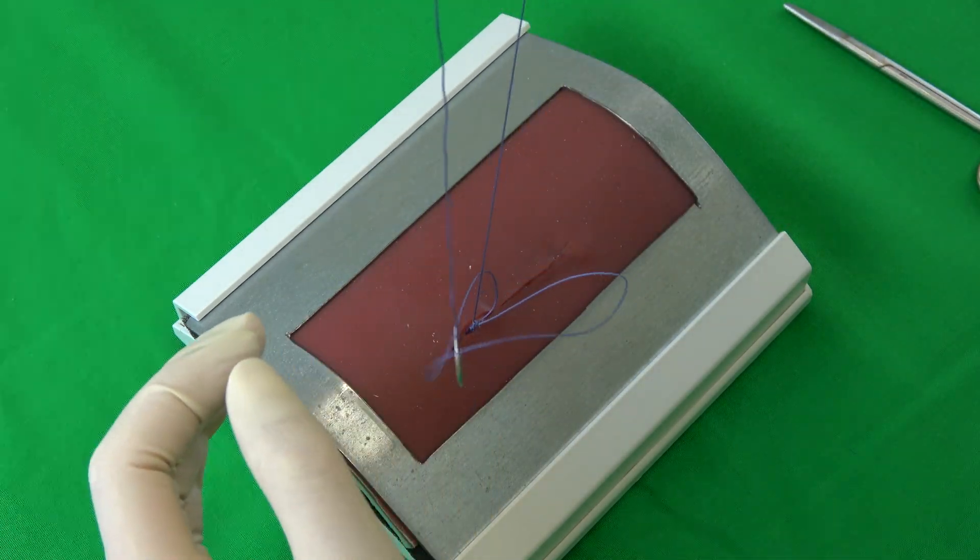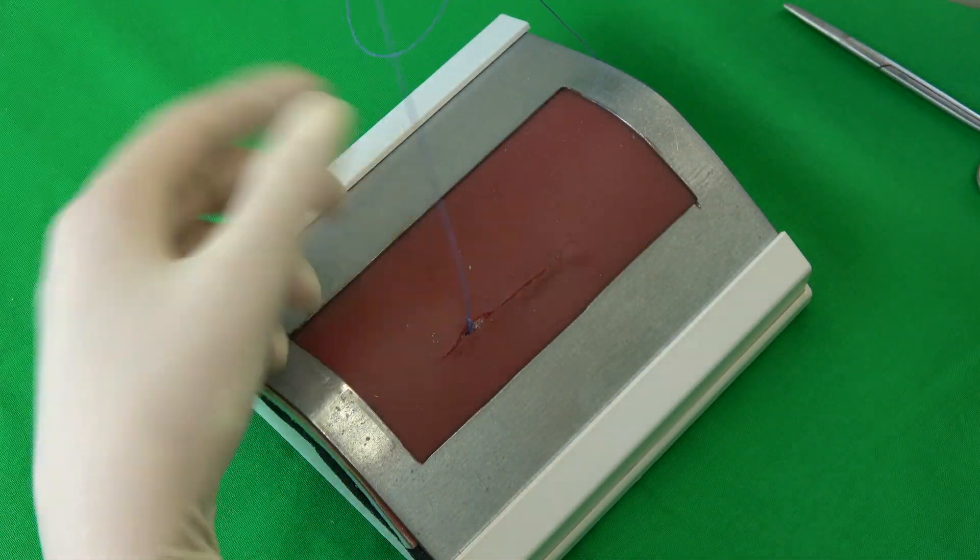To complete the knot, the free working end is pulled completely through the open loop, and the knot is pulled tight.